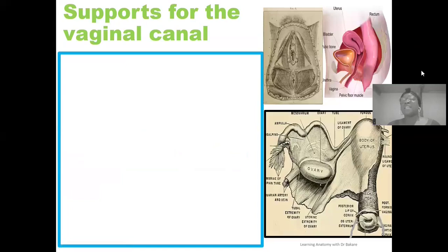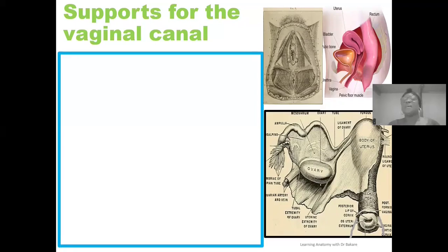The hymen can be used to gauge virginity because this membrane needs to be broken before penetration can occur during copulation. So when it is still intact, it can be used to indicate virginity. Let's now look at the structures that provide support for the vagina canal.